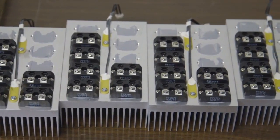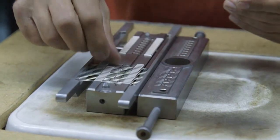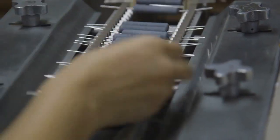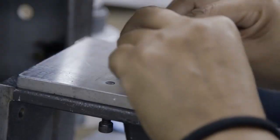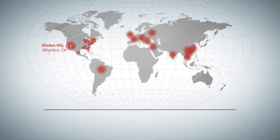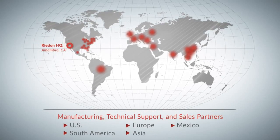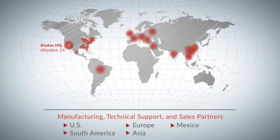Our installed customer base varies from the largest Fortune 100 conglomerates to global contract manufacturers to the smallest of independent companies. Today Riedon employs more than 130 team members worldwide and has manufacturing technical support and sales partners in the U.S., South America, Europe, Asia, and Mexico.